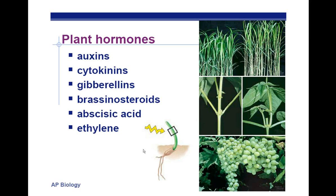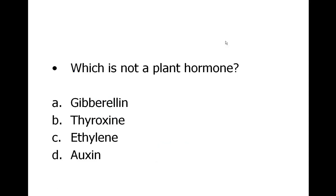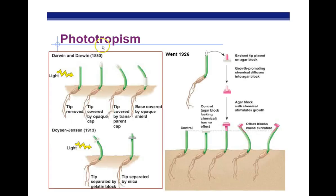Here are the six plant hormones. Make a table with a big square, and next to it write down things like function and other notes. Note that thyroxin is a human hormone, not a plant hormone. Phototropism: photo means light, tropism means movement, so phototropism literally means movement toward the light.